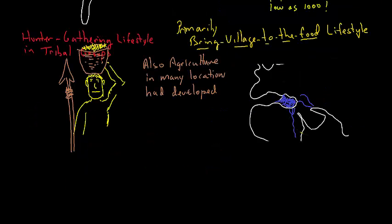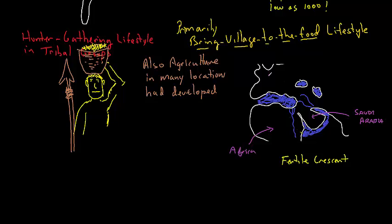Around 10,000 years ago, the agricultural revolution occurred. This occurred in what is called the Fertile Crescent, an area between the Mediterranean Sea, the Red Sea, and the Persian Gulf along the Nile River, Euphrates, and Tigris Rivers.